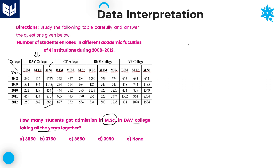I will write the values one by one. In the year 2008: 675; in 2009: 1145; in 2010: 454; in 2011: 810; in 2012: 666. These are the values that you need to add. Once you add all the values: 5 plus 5 is 10, 4 plus 6 is 10, giving 20 with a carry of 2.